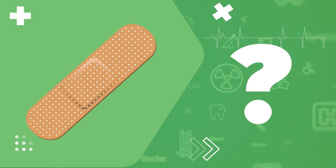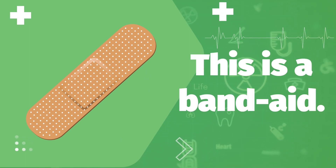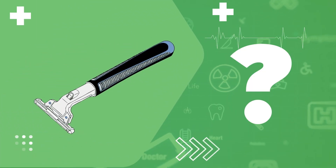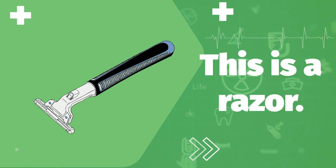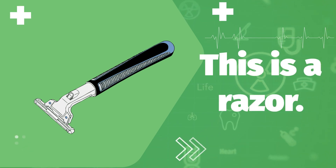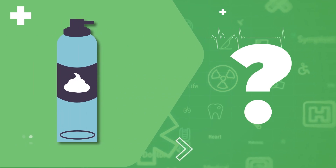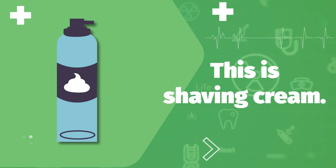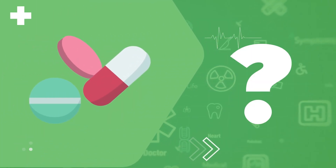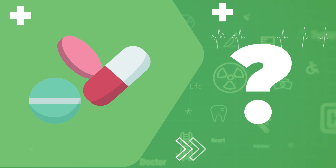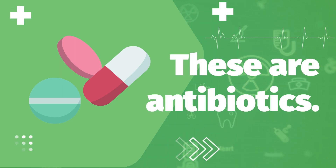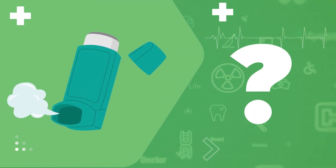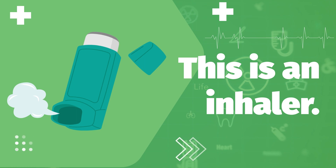What is this? This is a band-aid. What is this? This is a razor. What is this? This is shaving cream. What are these? These are antibiotics. What is this? This is an inhaler.